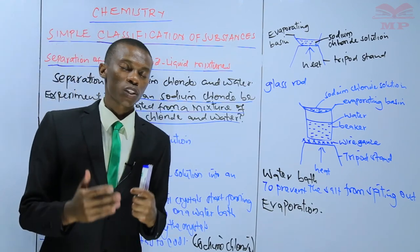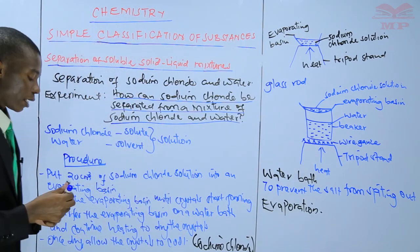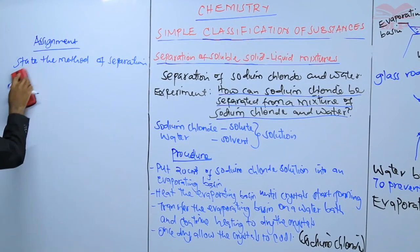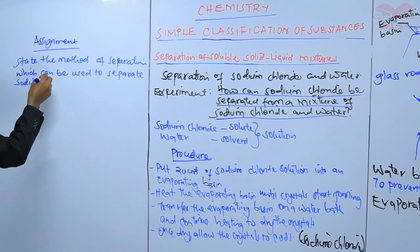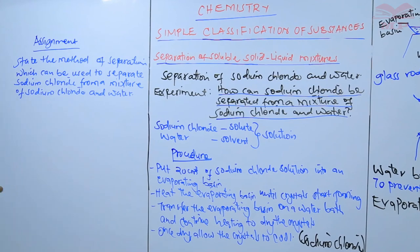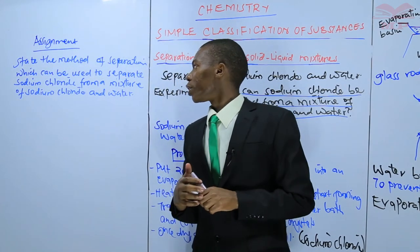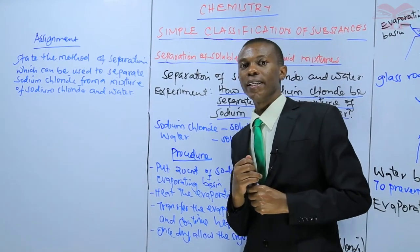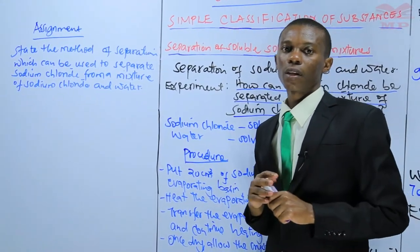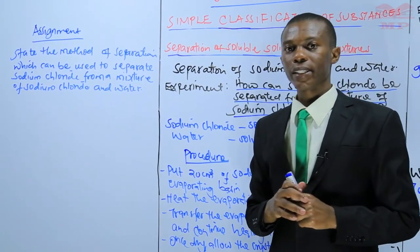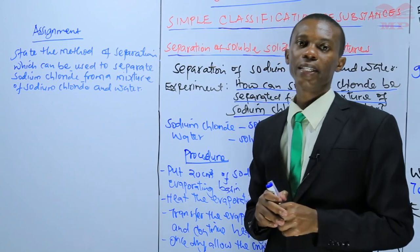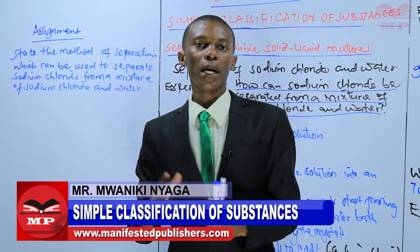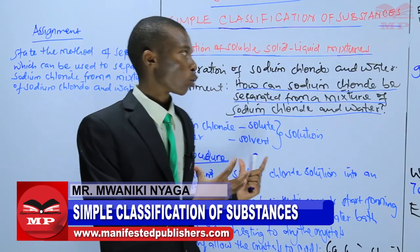That brings us to the end of our lesson today. Before I leave, I will give you this assignment: state the method of separation which can be used to separate sodium chloride from a mixture of sodium chloride and water. Ensure that you've done that before we meet in the next lesson. In the next lesson, we'll be discussing the separation of another soluble-solid-liquid mixture, not sodium chloride and water.